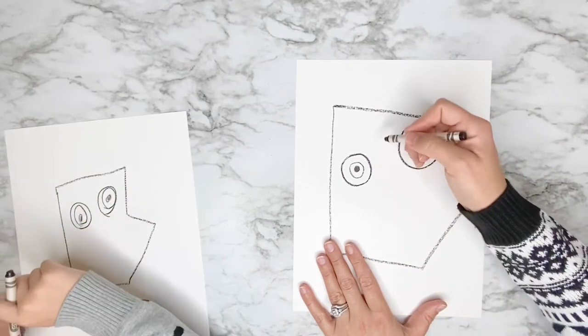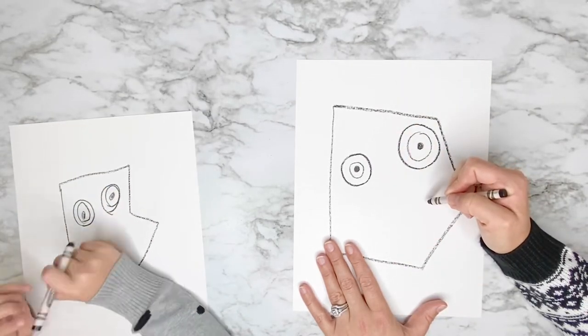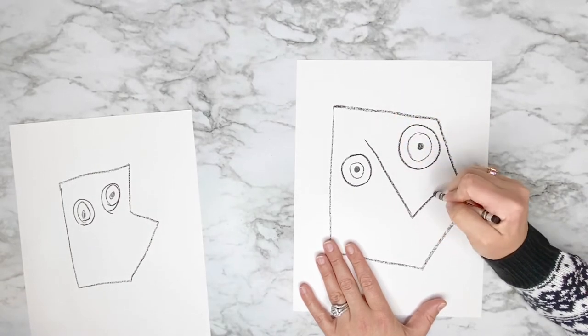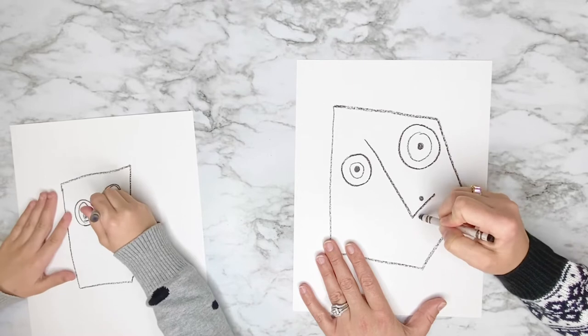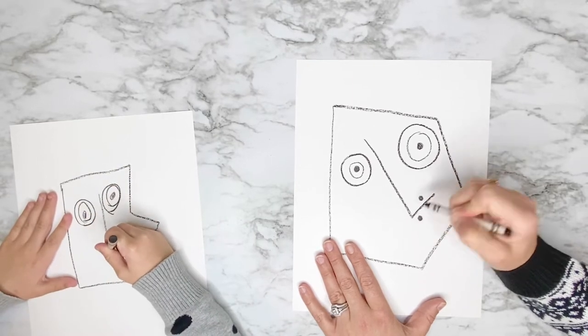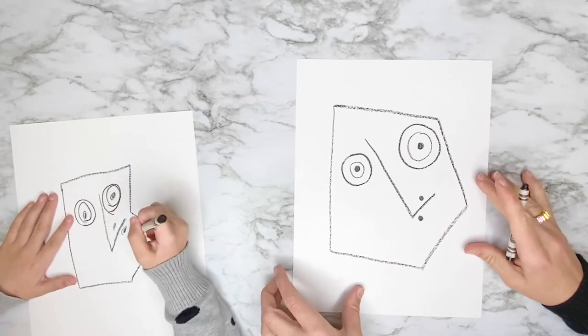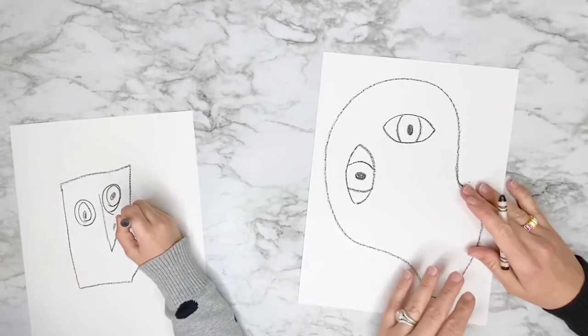And remember, this is abstract. So it doesn't have to be between the eyes. It could be off to the side. So I think I'm going to do one nose like this. And your noses can look however you want. They don't need to look like ours.